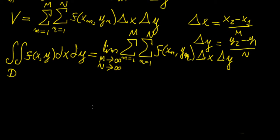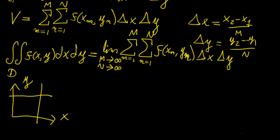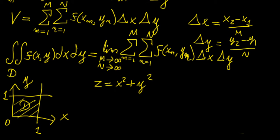Here is a simple example. We define a region of integration on the xy-plane that is a unit square — width one along both axes. We want to evaluate the double integral of the paraboloid x squared plus y squared over this region D. What we are finding by performing the double integral over that region is the volume confined underneath that surface within the unit square.